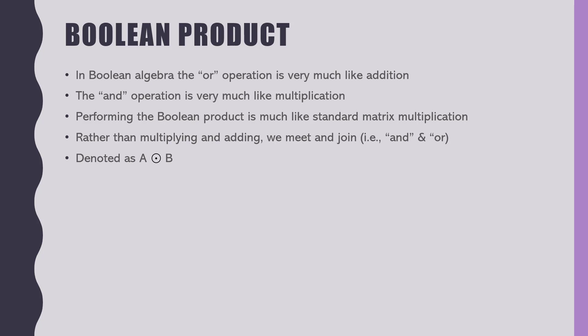When we perform a boolean product, it's very similar to performing multiplication on a regular matrix — but rather than multiplying and adding, we actually meet and join; we AND and OR. This is how we denote it — it's a circle with a dot in it. So what would the boolean product of [1,0; 0,1; 1,0] with [1,1; 0,0; 1,1] be?